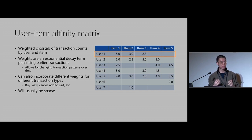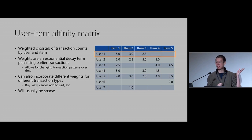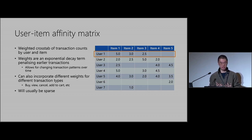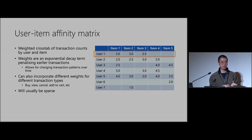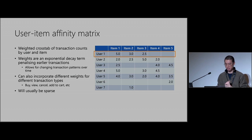If you have different types of transactions — for example, for online stores you might have buy, view, cancel, add-to-cart, and so on — you can apply different multiplicative weights to them as well. So buy might be worth 10, view is 1, cancel is minus 1, that kind of thing.